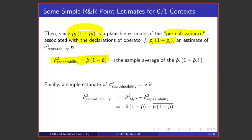Then that seems like a plausible estimate of sigma squared repeatability. Then recognizing that reproducibility variance is the difference between R&R variance and repeatability variance, we have an estimate of sigma squared R&R, we have an estimate of sigma squared repeatability, and so their difference becomes a plausible estimate of reproducibility variance in this 0, 1 context.